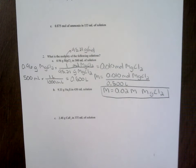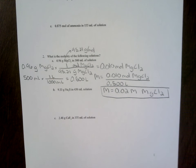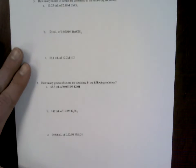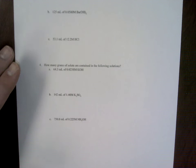These problems on this page also need to be completed. I'm going to show you one more example on this extra problem, and it is problem 4A. It says here on problem 4A, how many grams of solute are contained in the following solutions? We have 64.3 milliliters of 0.0238 molar potassium hydroxide.